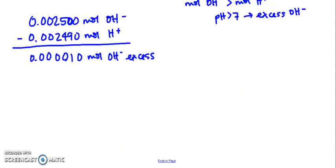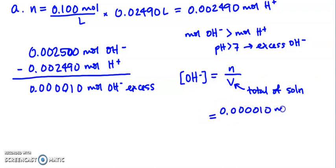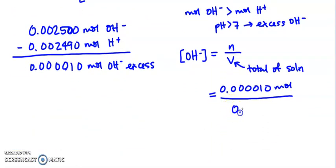And that's what's going to determine our pOH. So our OH minus concentration is going to be our moles over our volume. And the volume is going to be the total of our solution. So our moles are 0.0000010, and our total volume is 0.02490 plus our milliliters here, so that's a total of 49.9 milliliters or 0.04990 liters. So when I type this in, I get a concentration of 2 times 10 to the negative 4th moles per liter.